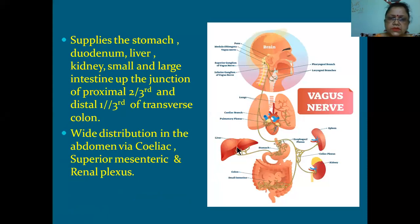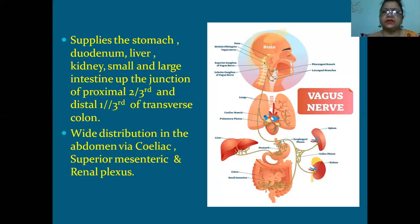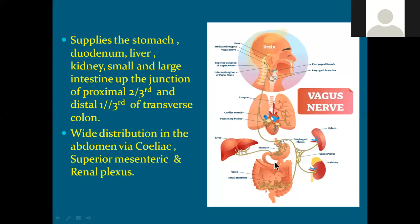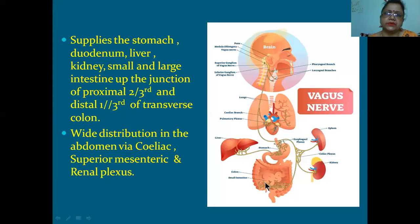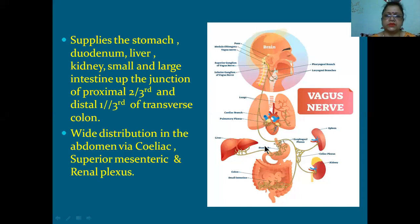Celiac means the stomach and first part of the duodenum. Superior mesenteric means small intestine and part of the large intestine. These are names you will repeatedly hear in the abdomen class. The celiac artery, superior mesenteric artery, and inferior mesenteric artery come from the abdominal aorta and supply various parts of the foregut, midgut, and hindgut.